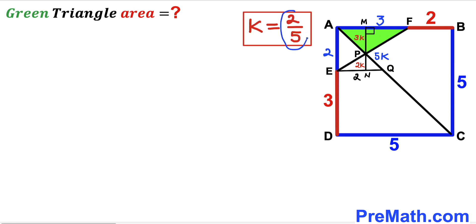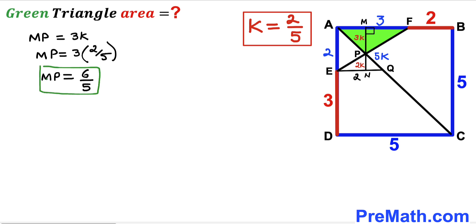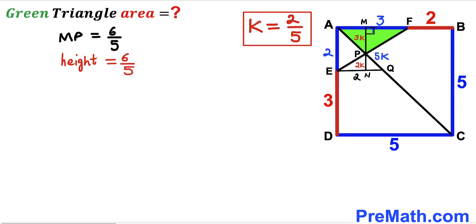Now, segment MP equals 3 times K, and our K value is 2/5. So MP equals 3 times 2/5, which gives us 6/5. Thus segment MP, which is the height of this green shaded triangle, turns out to be 6 divided by 5.